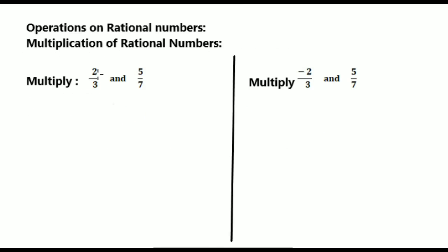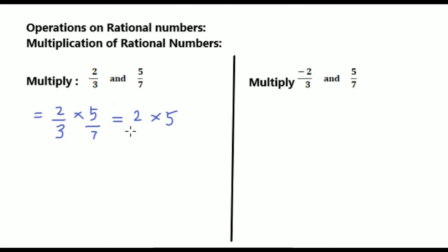See now multiplication of rational numbers. First one: multiply 2/3 and 5/7. Write down equal to 2/3 into 5/7. Now we have to multiply numerators and denominators. Write down 2 into 5 by 3 into 7. That equals to 2 fives are 10 by 3 sevens are 21. So the answer is 10/21.